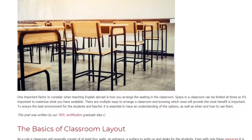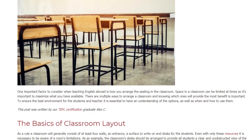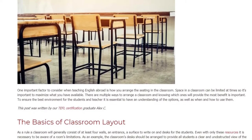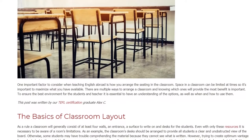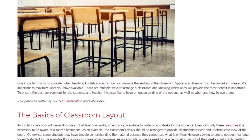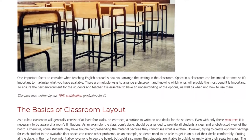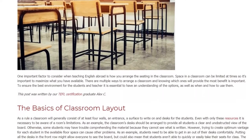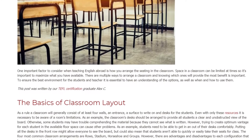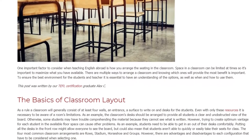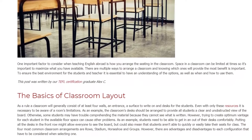The Basics of Classroom Layout. As a rule, a classroom will generally consist of at least four walls, an entrance, a surface to write on, and desks for the students. Even with only these resources, it is necessary to be aware of a room's limitations. For example, the classroom's desks should be arranged to provide all students a clear and unobstructed view of the board.